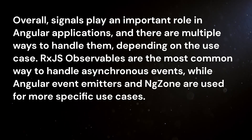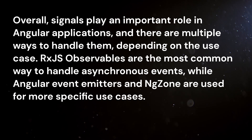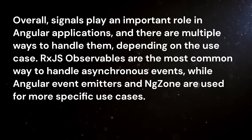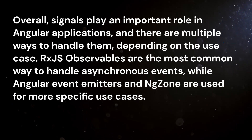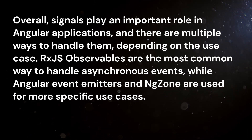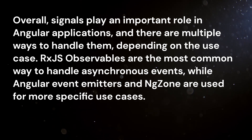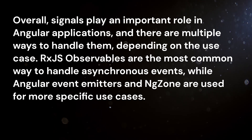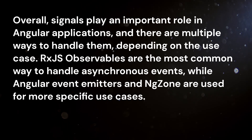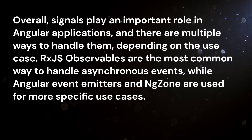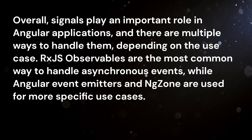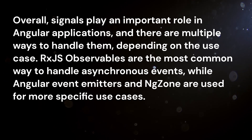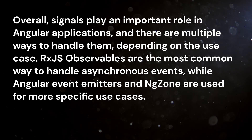Overall, signals play an important role in Angular applications and there are multiple ways to handle them depending on the use case. RxJS observables are the most common way to handle asynchronous events, while Angular event emitters and NGZone are used for more specific use cases.